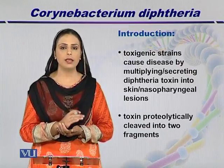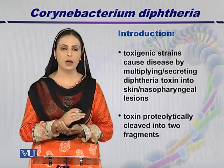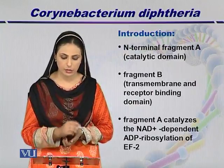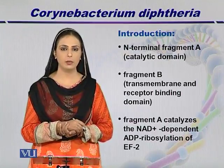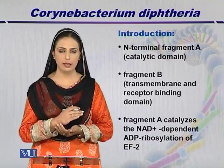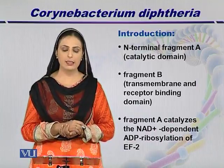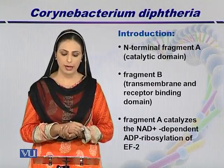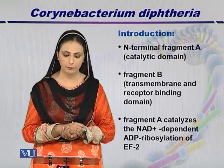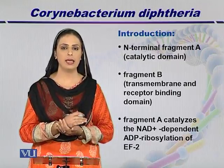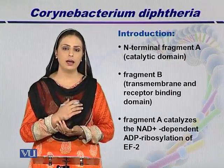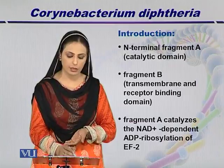Looking at the genetics of the toxins, they are proteolytically cleaved into two fragments: fragment A and fragment B. The amino terminal, or N-terminal, fragment A is a catalytic domain, while fragment B is a transmembrane and receptor-binding domain.